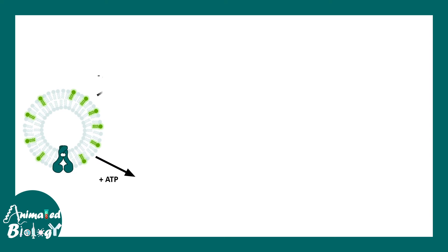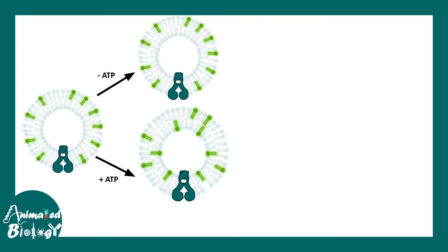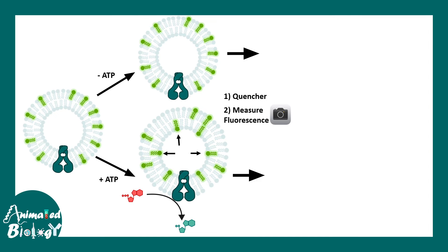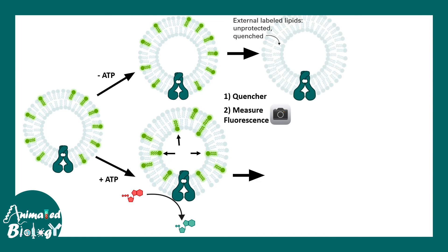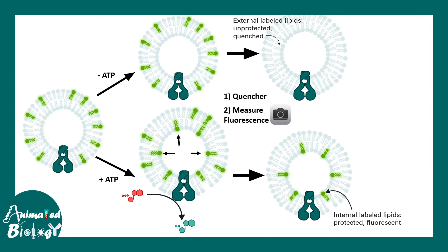To understand whether this requires ATP, there are two scenarios: in one, ATP was provided into the in vitro solution, and in the other, ATP was not provided. Theoretically, where ATP is provided there should be movement of lipids towards the inner side, and where there is no ATP there would be negligible movement. A quencher was then provided into the solution; the quencher quenches the fluorescence of every molecule outside the vesicles. So if fluorescence is measured at this point, there would be a drop in fluorescence. However, in the ATP-containing solution, fluorescence would still remain because some lipids have moved inside with the help of flippase.